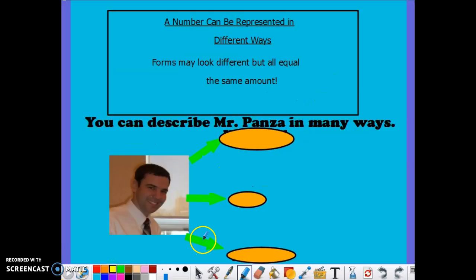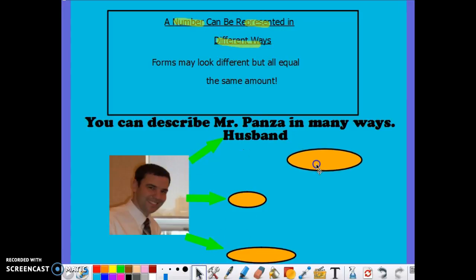A couple other things that we need to be aware of is the fact that numbers can be represented in many different ways. For example, you can describe Mr. Panza in many different ways. You can call me a husband, a son, or a father. Numbers can be described as standard form, written form, and expanded form versions.